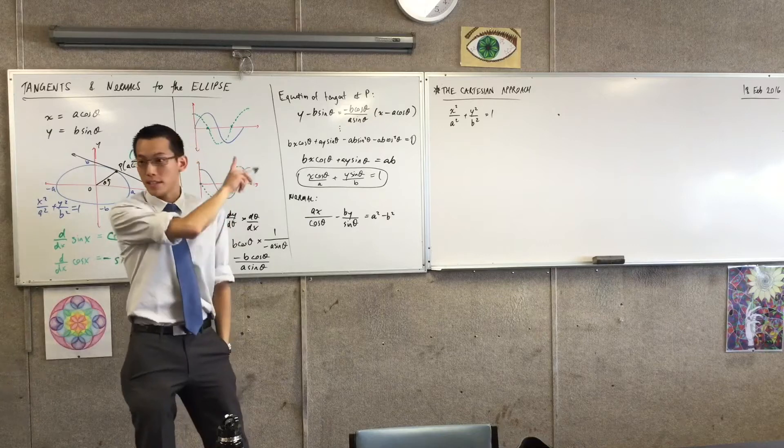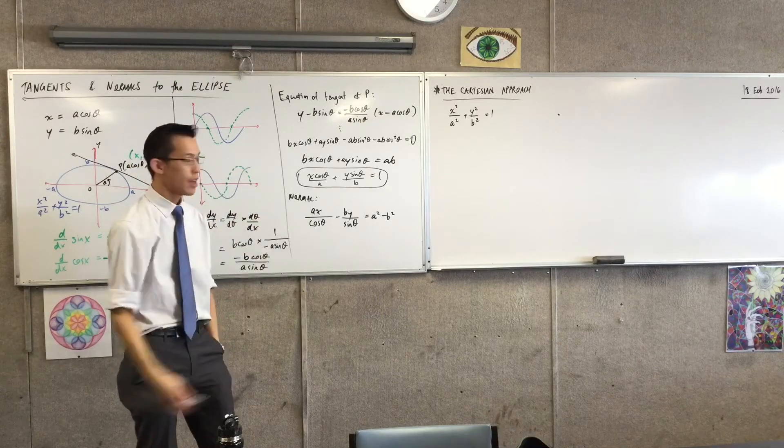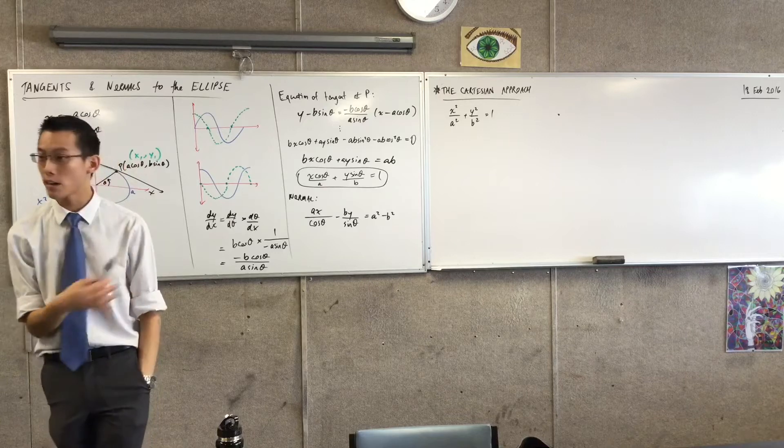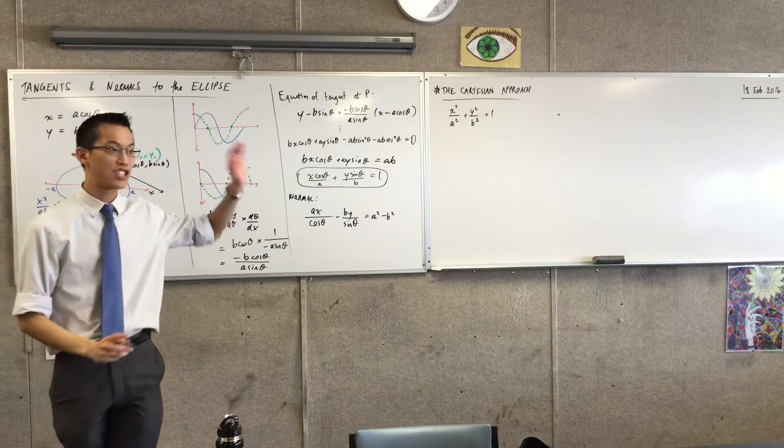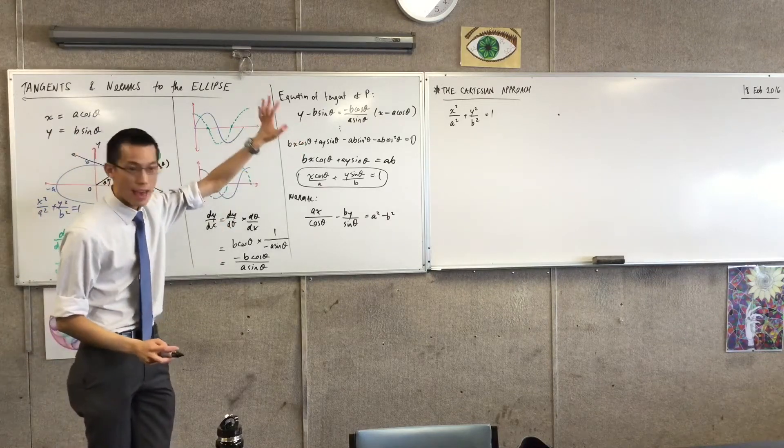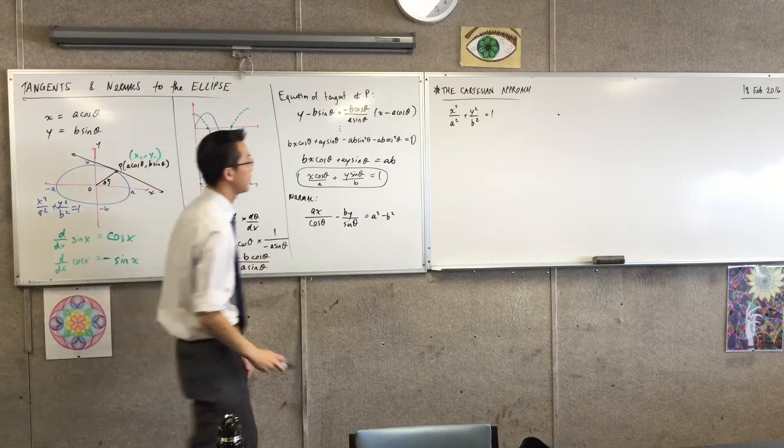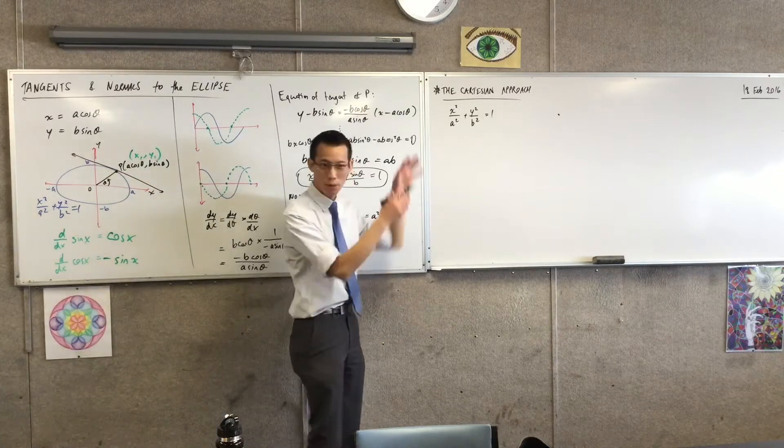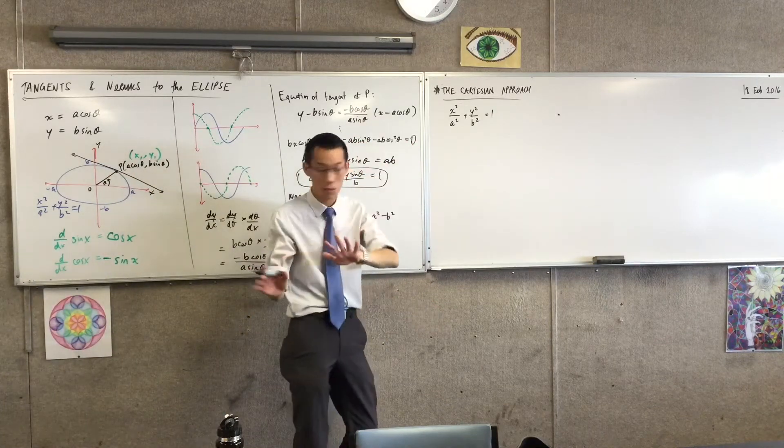I'm going to use implicit differentiation on this. Implicit differentiation is going to be very useful, because then I don't need to make y the subject. I can just differentiate it as it is, and then out it will unfold. First step, and I'm going to try and put as many steps as I can here, so nothing is skipped over.